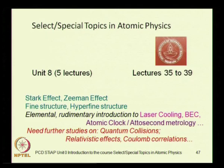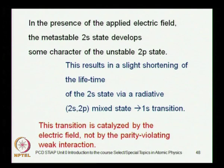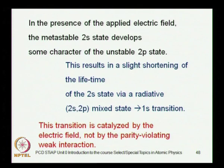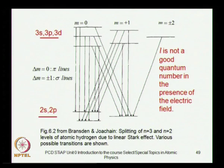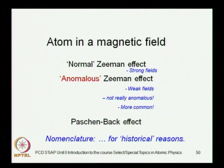In Unit 8, we will find that in the presence of an external electric field the atom behaves differently — the Stark field can actually change the lifetime of an excited state. In the presence of an electric field, L is not a good quantum number, so one must use perturbative methods dealing with degenerate states. We will also learn what happens when an atom is placed in a magnetic field. There is a family of interactions known as the Zeeman family, including the normal Zeeman effect and the Paschen-Back effect, which correspond to different magnitudes of the applied magnetic field.